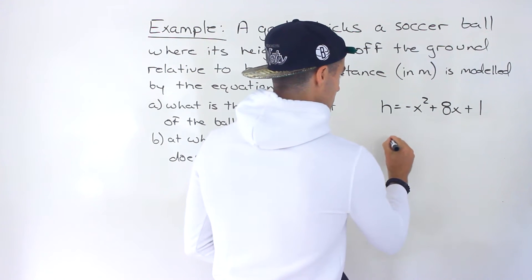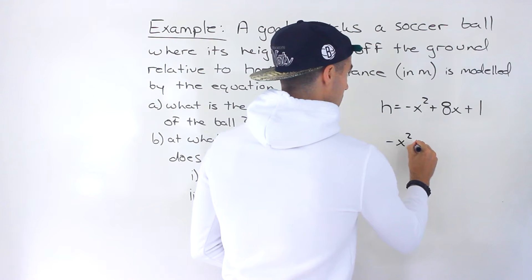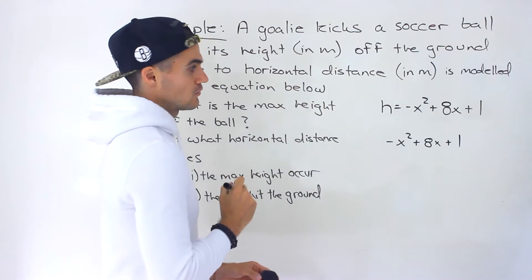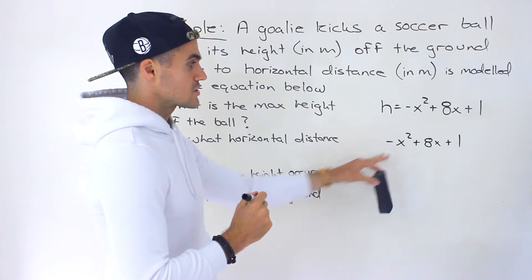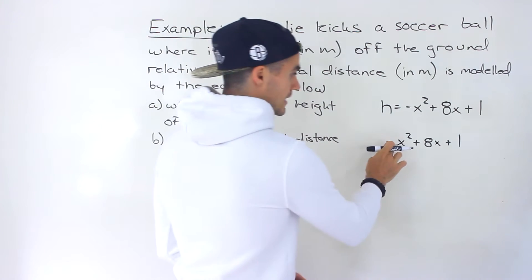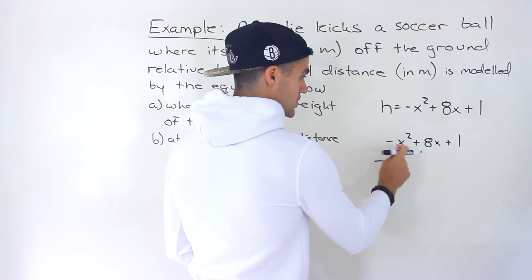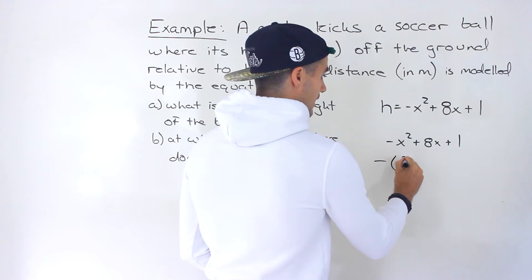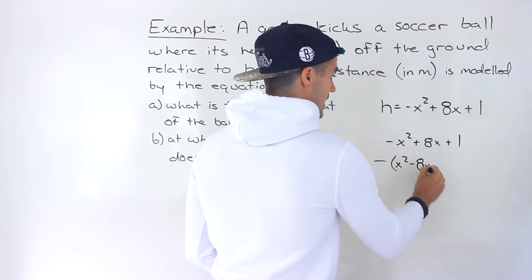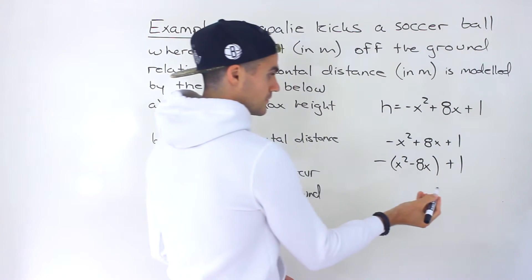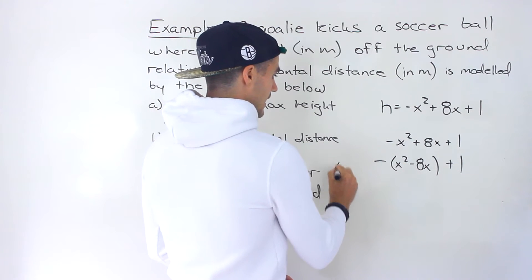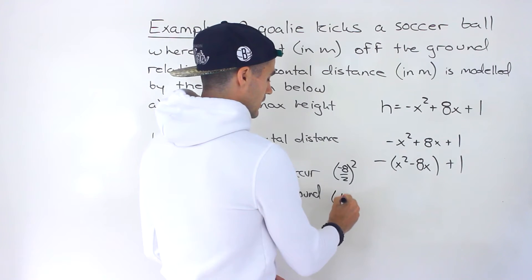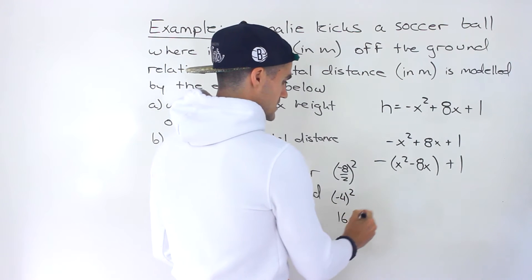So we can complete the square on this. Let me rewrite the right side so we don't have to keep writing the h over and over. The first step is to take out the negative 1 — the x squared term has to be by itself — so we take out the negative 1 from the first two terms, ending up with x squared minus 8x, and then we still have the plus 1 at the end. Then we take the negative 8, divide by 2, and square it: negative 4 squared gives us 16.